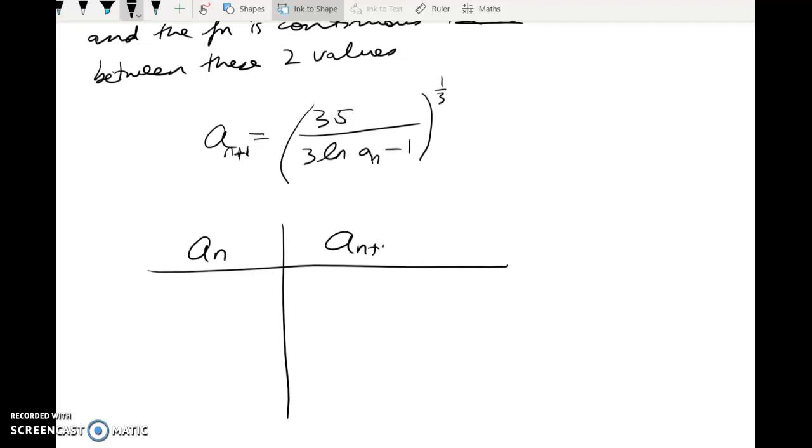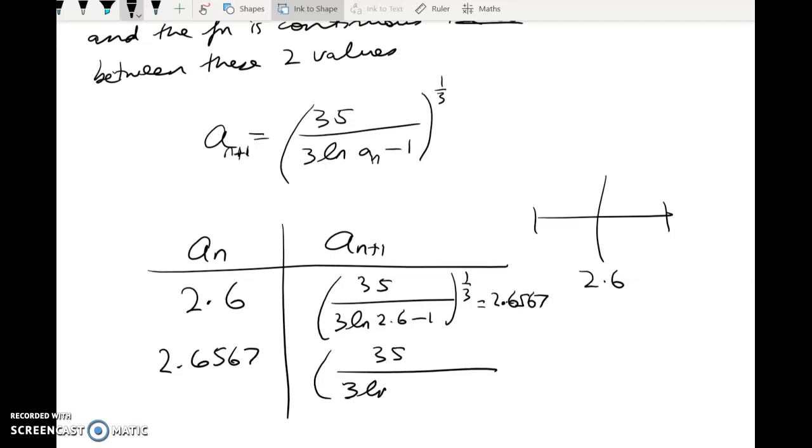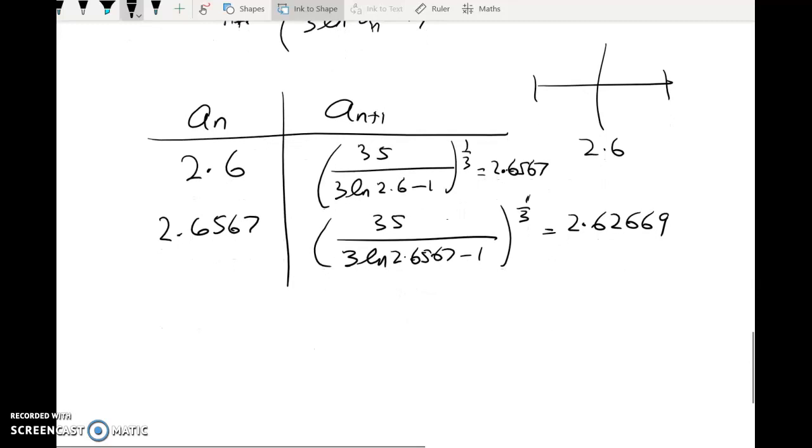So here's A n, here's A n plus 1. I just started smack in the middle of it at 2.6, and I put in 2.6 here, and then I got out this. And that gave me 2.6567, and it said to take those to 4 dp. Chucking that back in gives me this. Same again, but using that number, 2.6567. I bet there's no one watching by now, because these questions are so boring. But actually, there we go. So that's to 5 dp. That's right, we can go a bit extra. Moving on with that, I'm going to take that to 4 dp now. It's 2.6267.